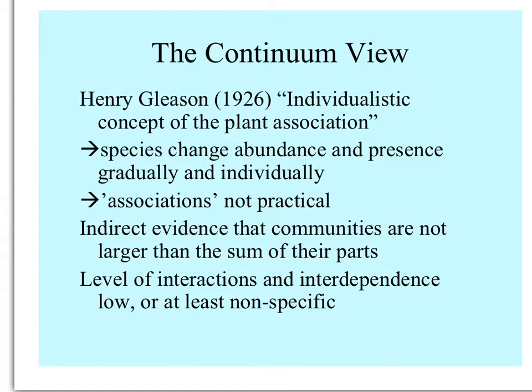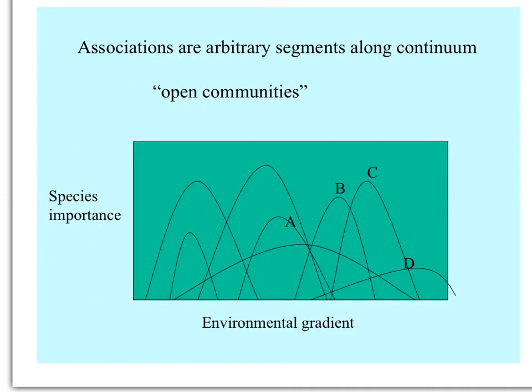He felt that communities are not larger than the sum of their parts, and that levels of interactions and interdependence of plant species with each other were low, or at least relatively nonspecific. This individualistic concept shows open communities, where each species has a different distribution along an environmental gradient, and there are no nodes — wherever you happen to be, you simply sample the assemblage of species at that point in the landscape.